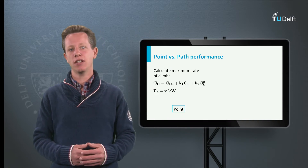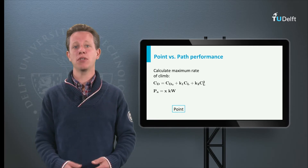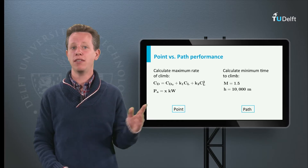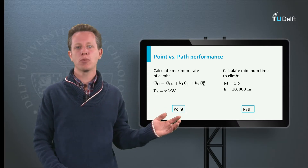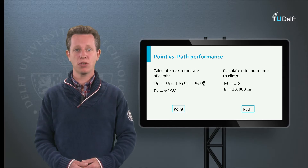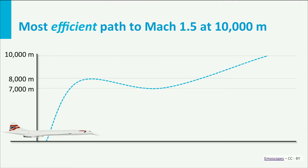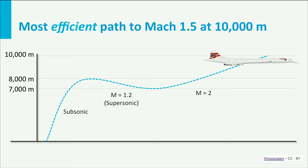However, imagine that the problem is not to calculate just this specific condition, but the objective is to calculate the minimum time to climb from sea level conditions just after takeoff to Mach 1.5 at 10,000 meters and the corresponding flying strategy. This is a well-known problem for supersonic military aircraft and the solution to this particular problem will most likely surprise you. I have tried to visualize it here. In order to get to the final flight condition as fast as possible, the aircraft should first climb at a subsonic speed, then dive and accelerate, then climb and accelerate to a Mach number well beyond the desired Mach number, and finally decelerate and climb to the final condition.